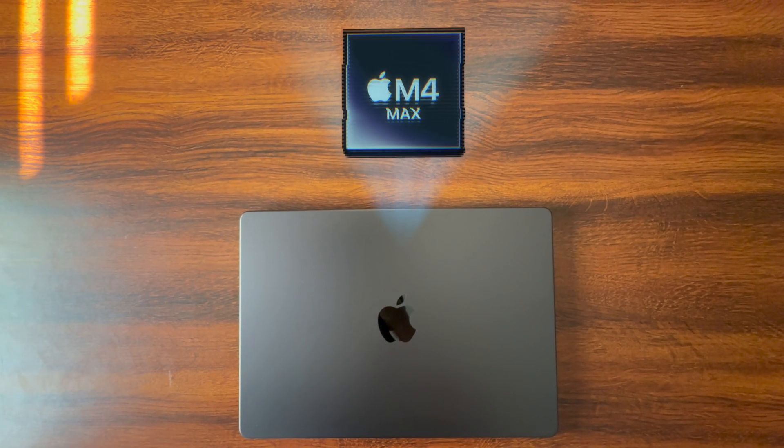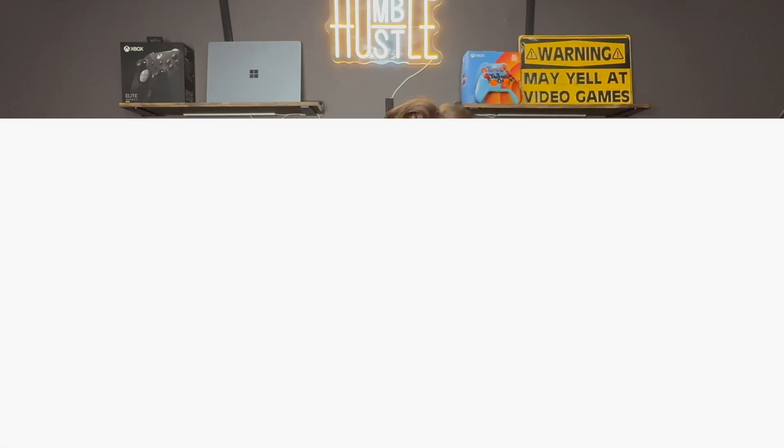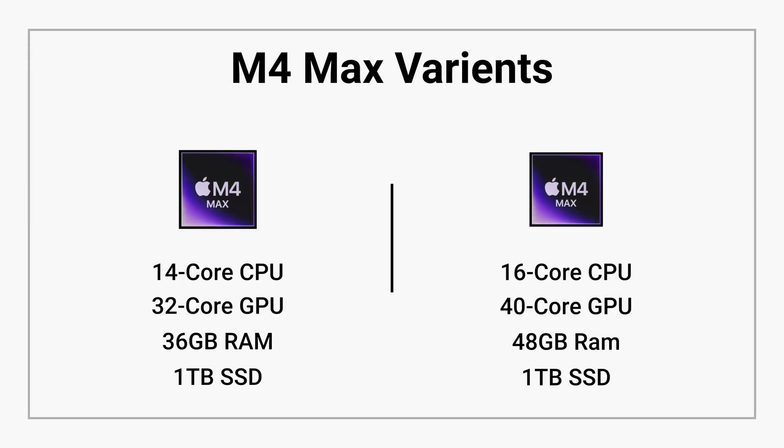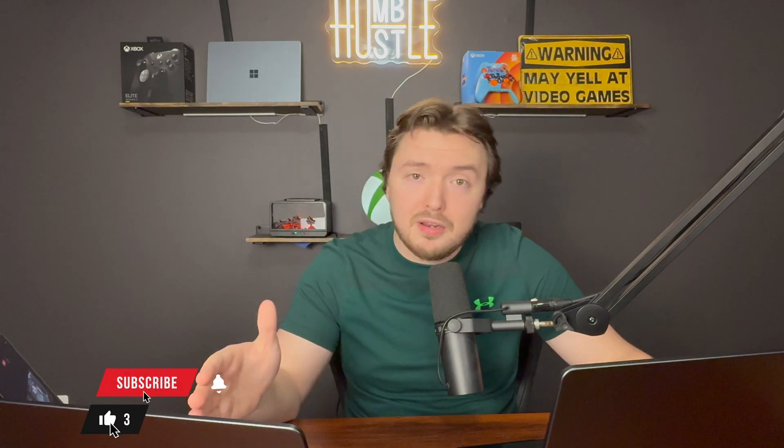Every year Apple unveils their brand new Max chip, and today is no different. We have two M4 Max variants: one with a 14-core CPU and 32-core GPU, and the other with a 16-core CPU and 40-core GPU. The real question is whether you can tell the difference between the 14-core and 16-core — not just in benchmarks, but in everyday tasks like video editing, browsing the web, and Xcode development. Today I want to answer those questions and help you decide if you need this chip or can step down.